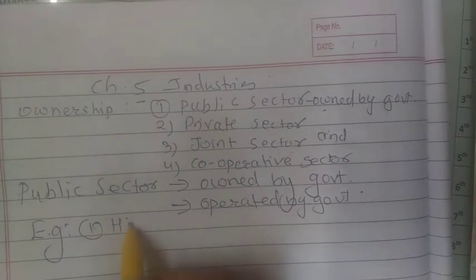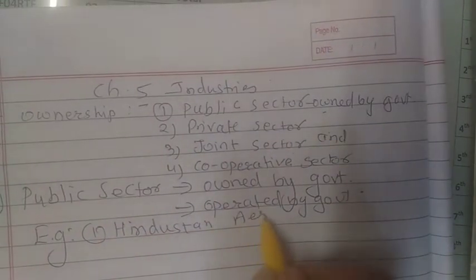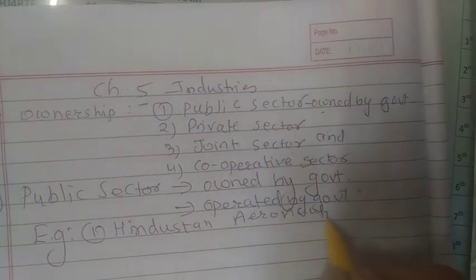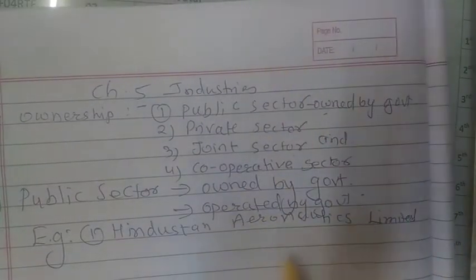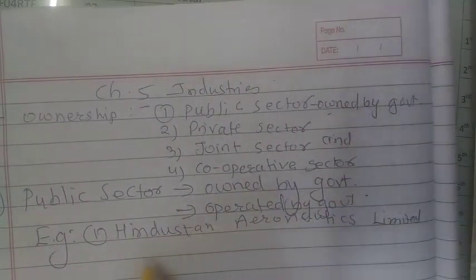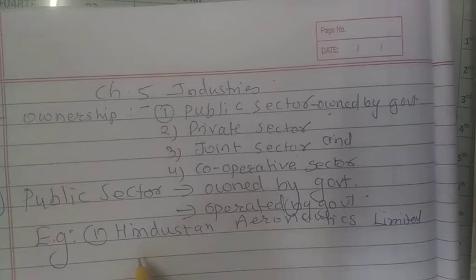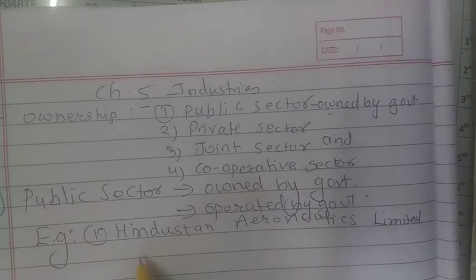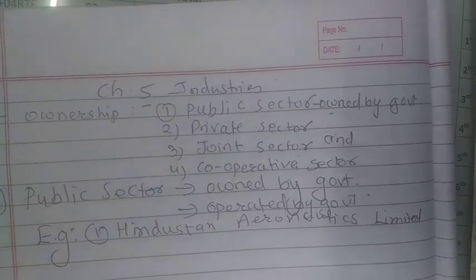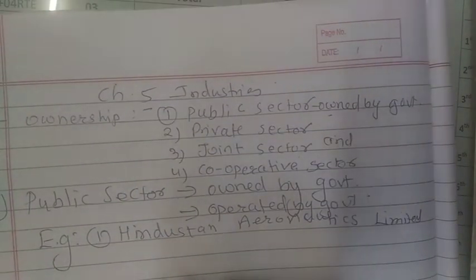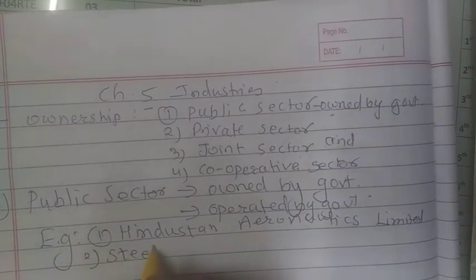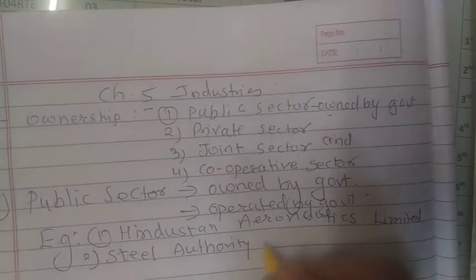Examples of public sector industries include Hindustan Aeronautics Limited and Steel Authority of India Limited. These are owned and operated by the government.